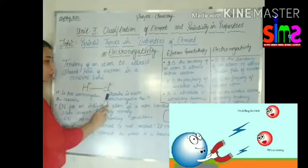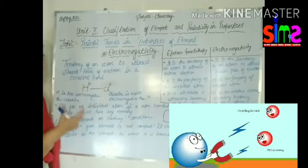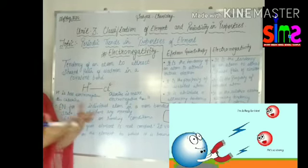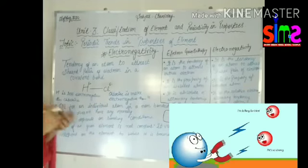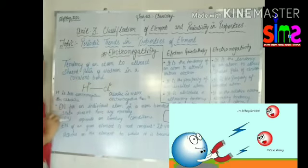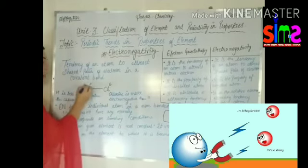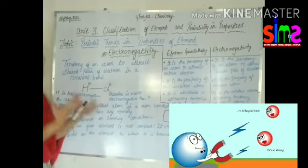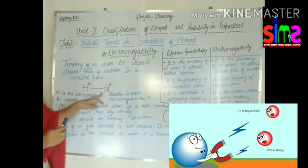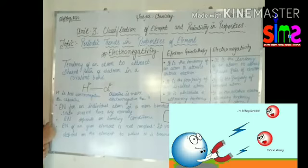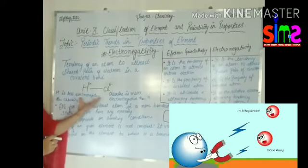In HCl, chlorine is more electronegative than hydrogen. Chlorine attracts the hydrogen's electrons. Chlorine has a partial negative charge and hydrogen has a partial positive charge. What is electronegativity? The tendency of an atom to attract a shared pair of electrons in a covalent bond.